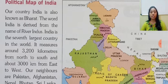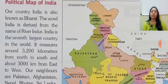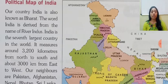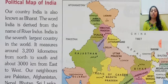India is the seventh largest country in the world. Puri duniya mein agar baat karein toh India the seventh largest country hai. It measures around 3200 kilometers from north to south, and about 3000 kilometers from east to west. Yeh bohot bada hota hai.